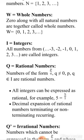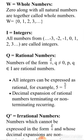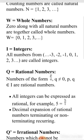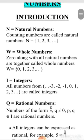Next, Whole Numbers. Zero along with all natural numbers are together called whole numbers. In other words, the numbers starting from 0 are called whole numbers. Natural numbers start from 1, whole numbers start from 0.